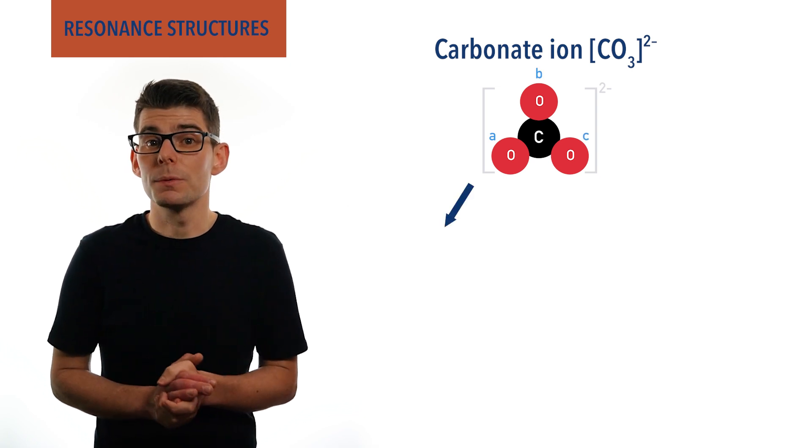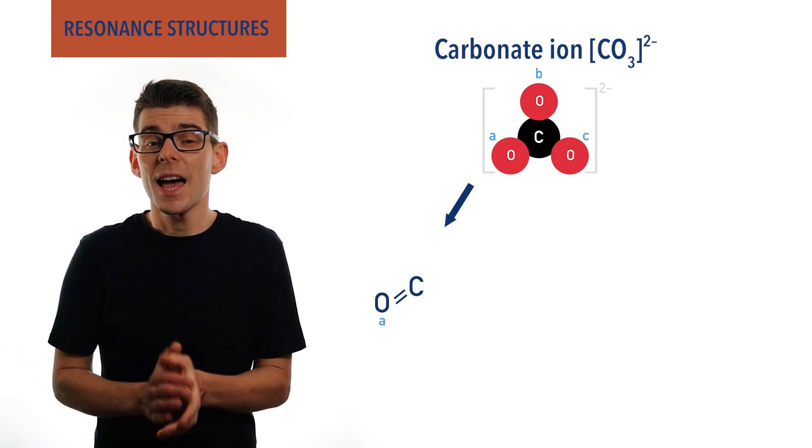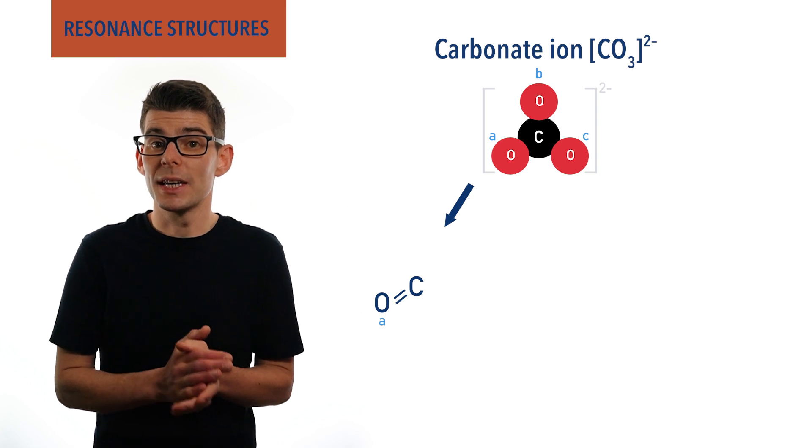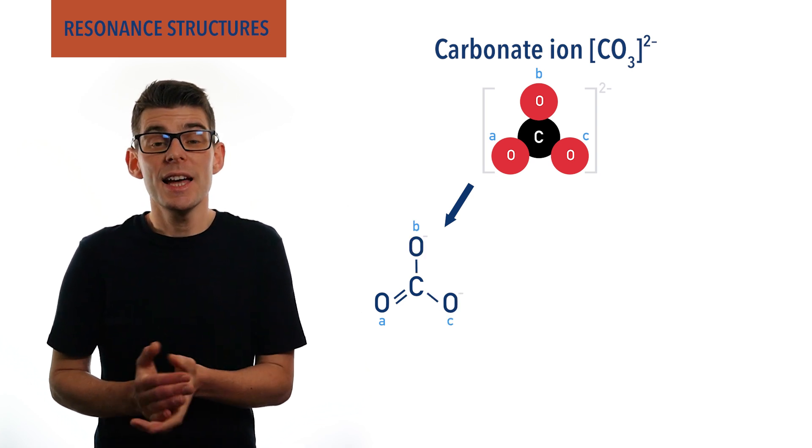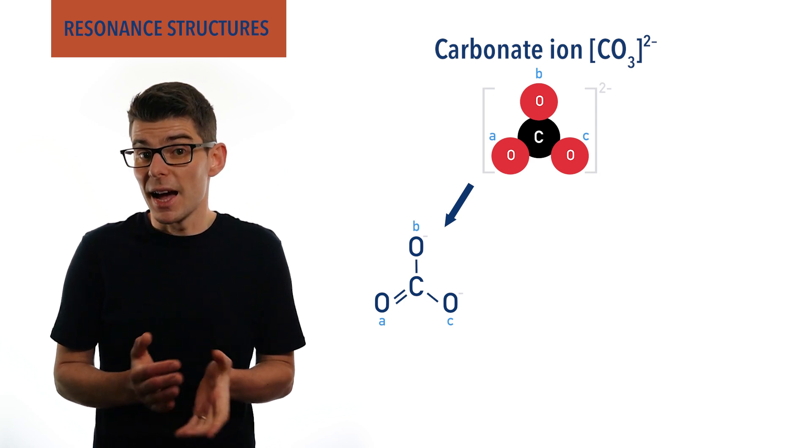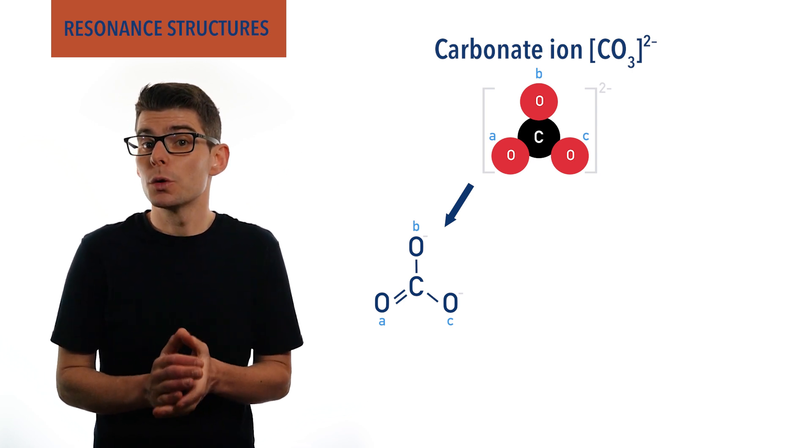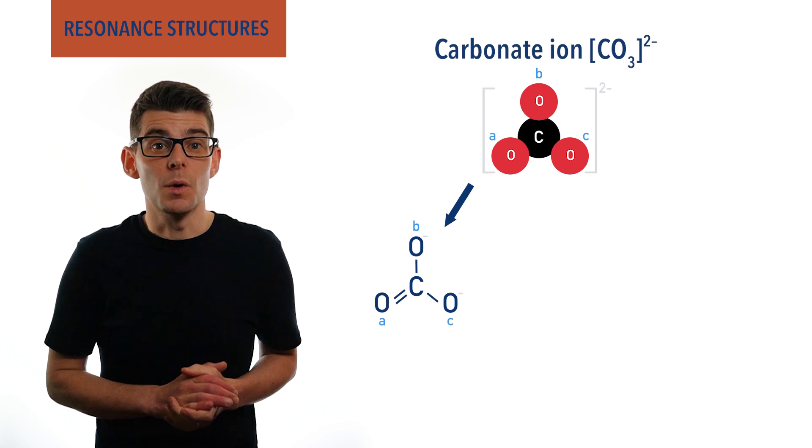In the first, there could be a double bond from the carbon to oxygen A, and single bonds to oxygens B and C. This arrangement would give oxygens B and C a negative charge each, as to complete the outer shell, each would have had to have gained an electron from somewhere else.